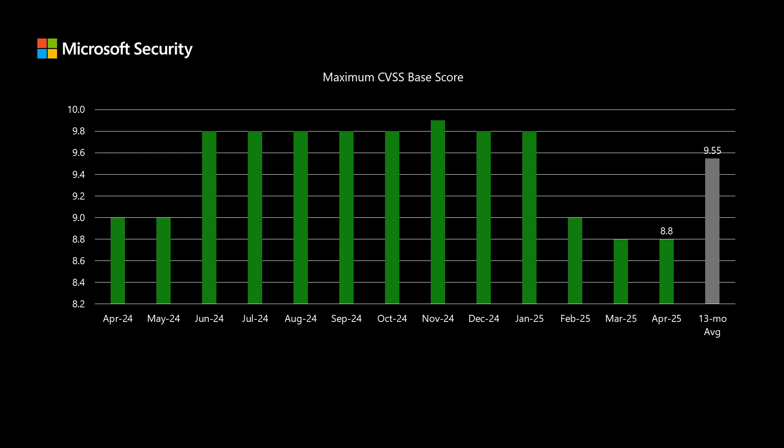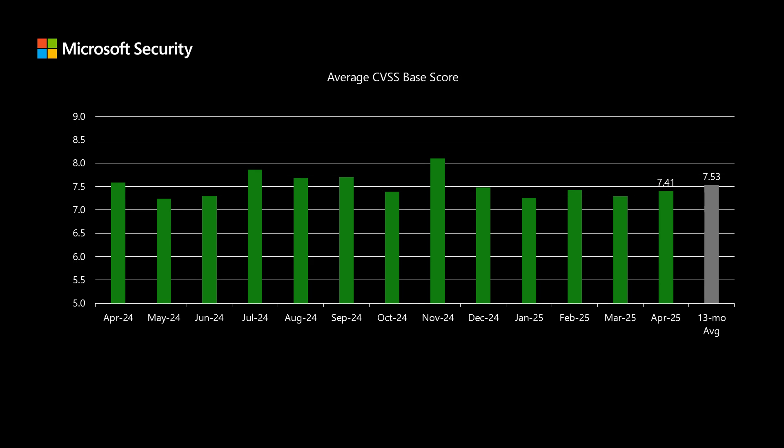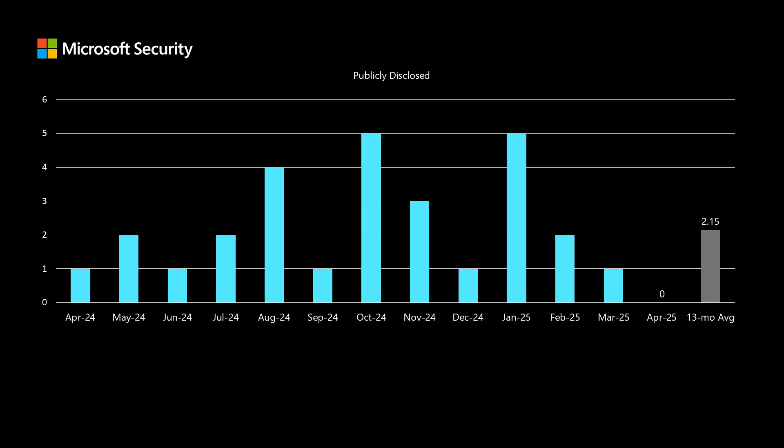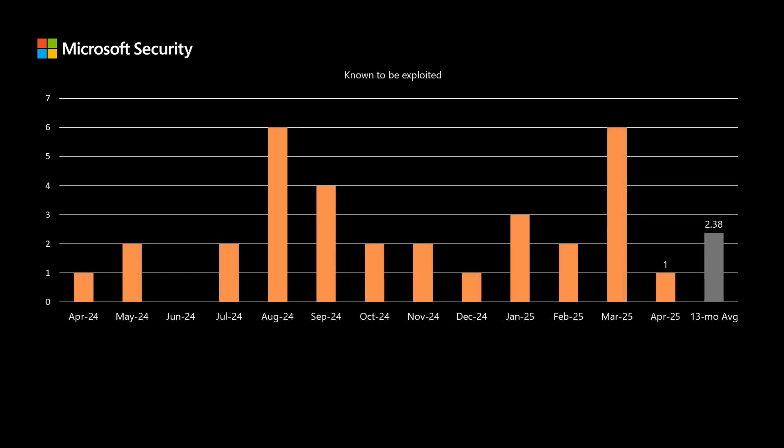CVSS is a scale between 0 and 10, where 10 represents the highest level of risk. We have an average of around 9.5 for that high watermark. This month, the highest-scored CVE in today's set comes in at 8.8. The average score across the entire release comes in at 7.41, which is about a tenth of a point lower than our average over the past 13 months. There are no publicly disclosed vulnerabilities in today's set — we've been averaging just over two — and there is one vulnerability that was known to be exploited at the time of release, compared to an average of a little over two per month over the past 13 months.